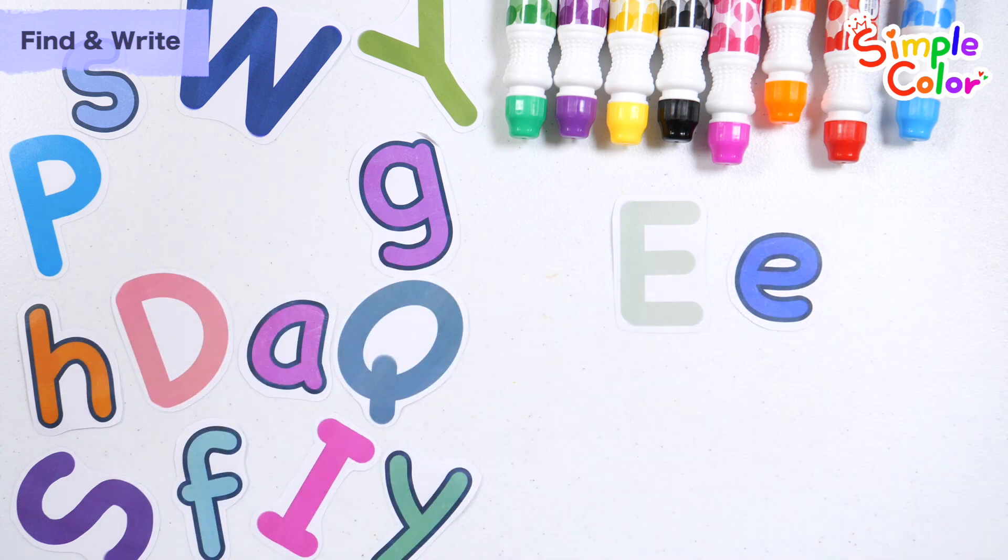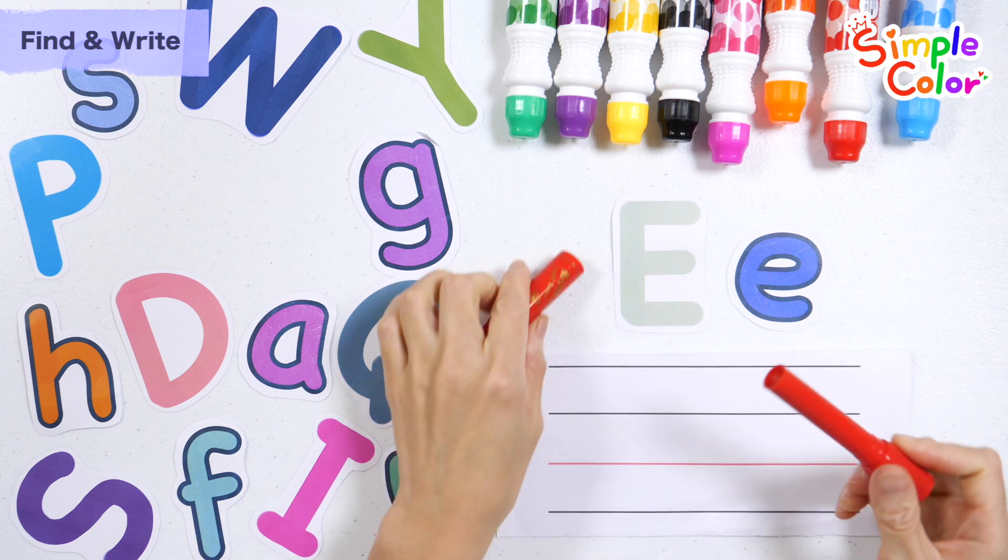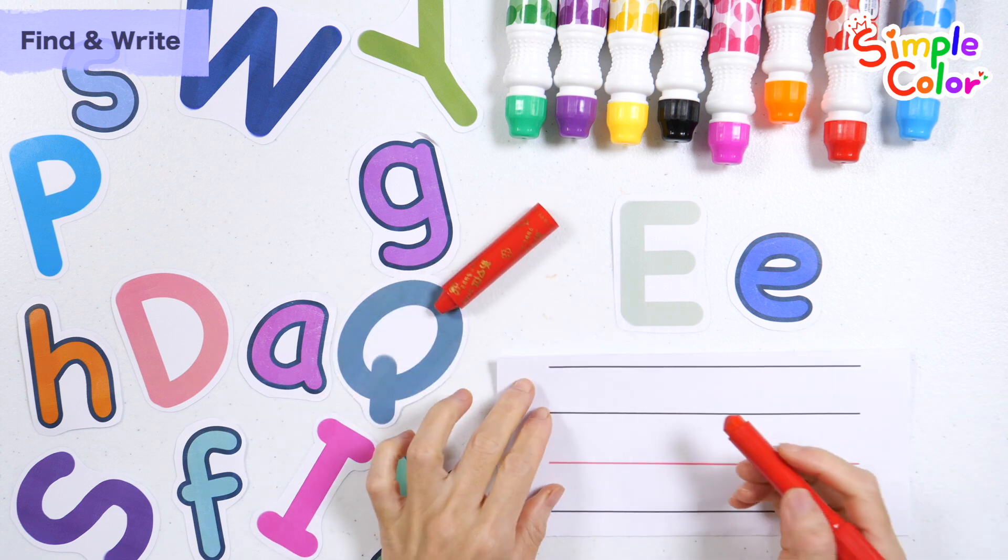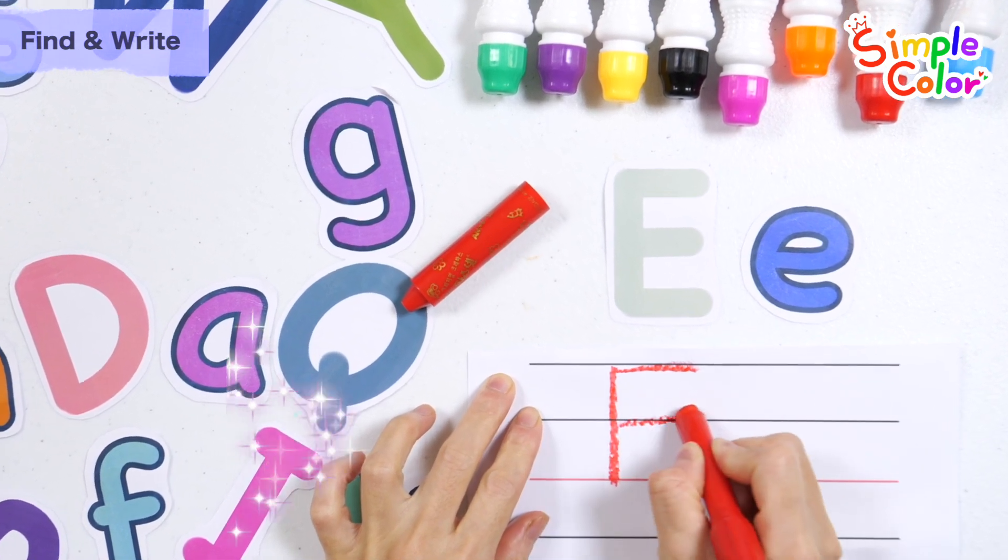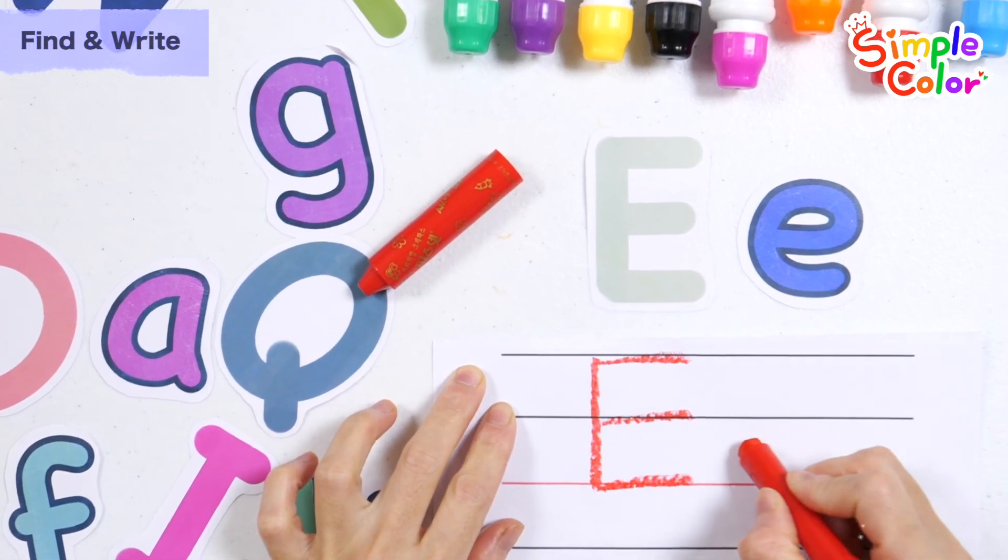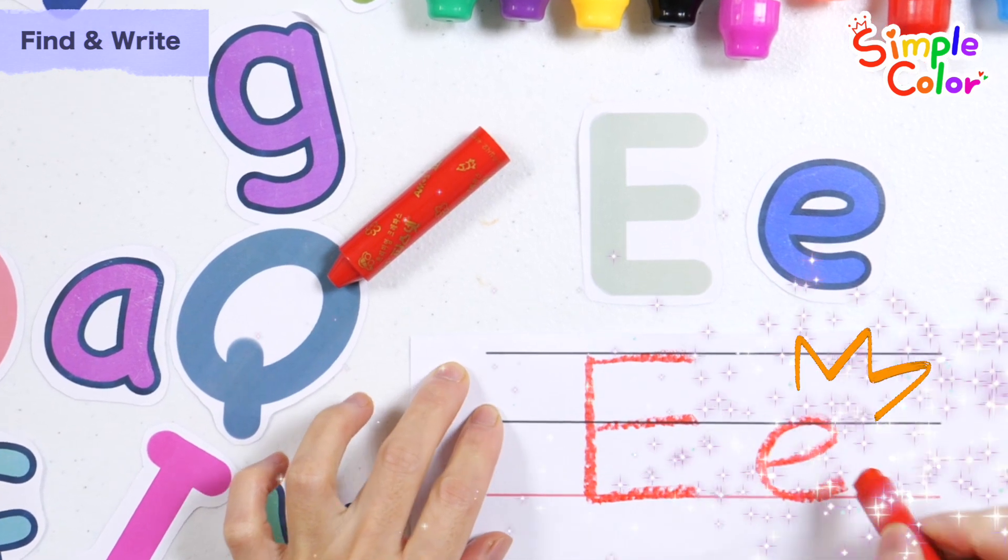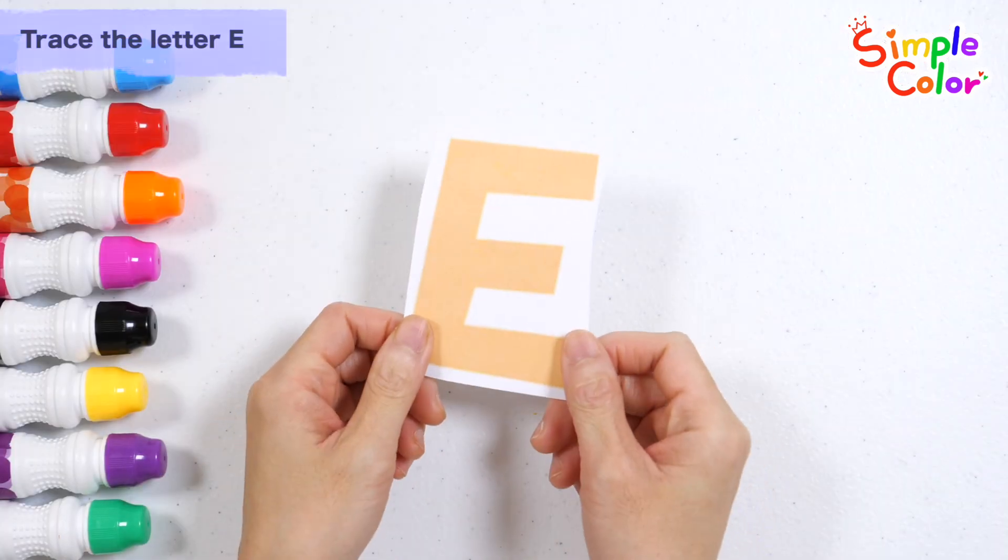Lowercase letter e. Let's write the alphabet with red crayon. Uppercase E, uppercase E, lowercase e. Alphabet E.